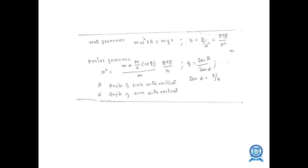For the Watt governor: M·ω²·R·H = M·G·R. For the Porter governor: N² = [(M + M/2)·(1 + Q)/M] × 895/H, where beta is the angle of the link with the vertical and alpha is the angle of the arm with the vertical. These are the formulas to find the speed of the Watt and Porter governors.